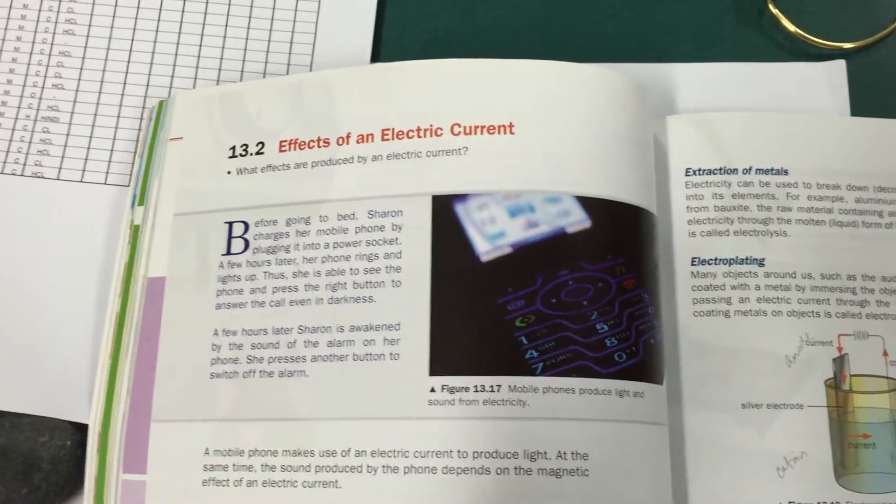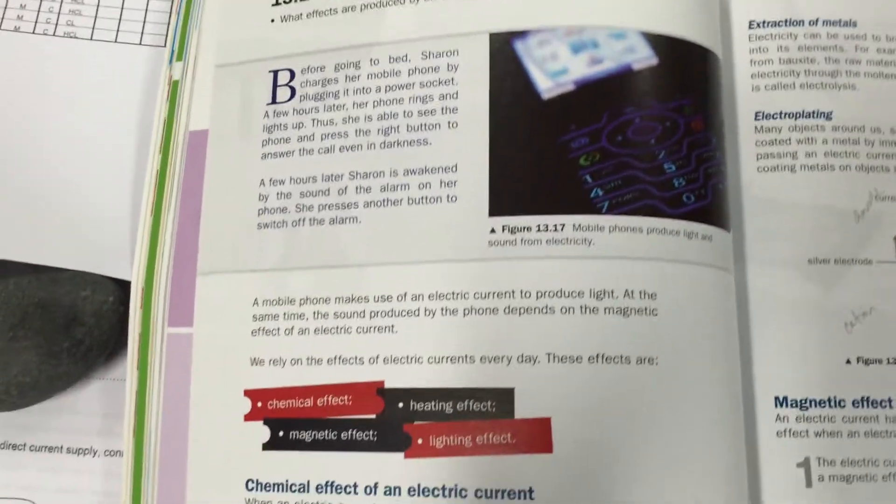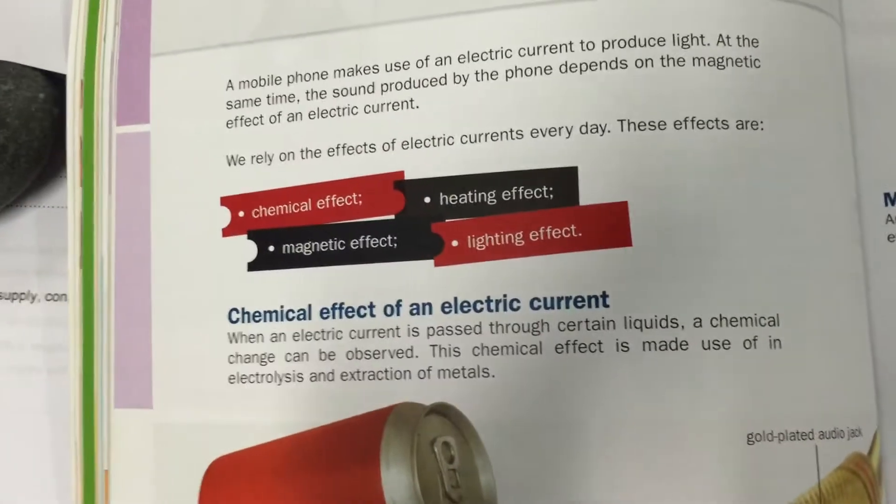We're coming to this thing called effects of electric current. In the effects of electric current, we have the first effect, chemical effect of an electric current.